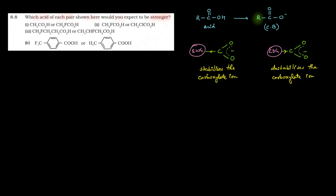So, one group stabilizes and the other destabilizes. The acid whose conjugate base is stabilized (by the electron withdrawing group) will be the stronger acid, while the one with an electron donating group will be weaker. Now let's check the first part. In the first part, we are given CH₃COOH and CH₂FCOOH.